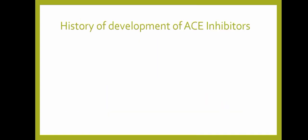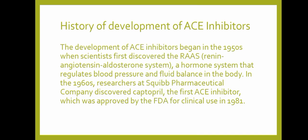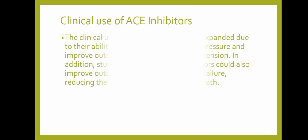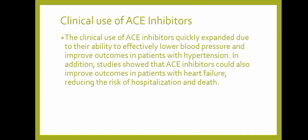History of development of ACE inhibitors. The development of ACE inhibitors began in the 1950s when scientists discovered the renin-angiotensin-aldosterone system, a hormone system that regulates blood pressure and fluid balance. In the 1960s, researchers at a pharmaceutical company discovered captopril, the first ACE inhibitor, which was approved by the FDA for clinical use in 1981.